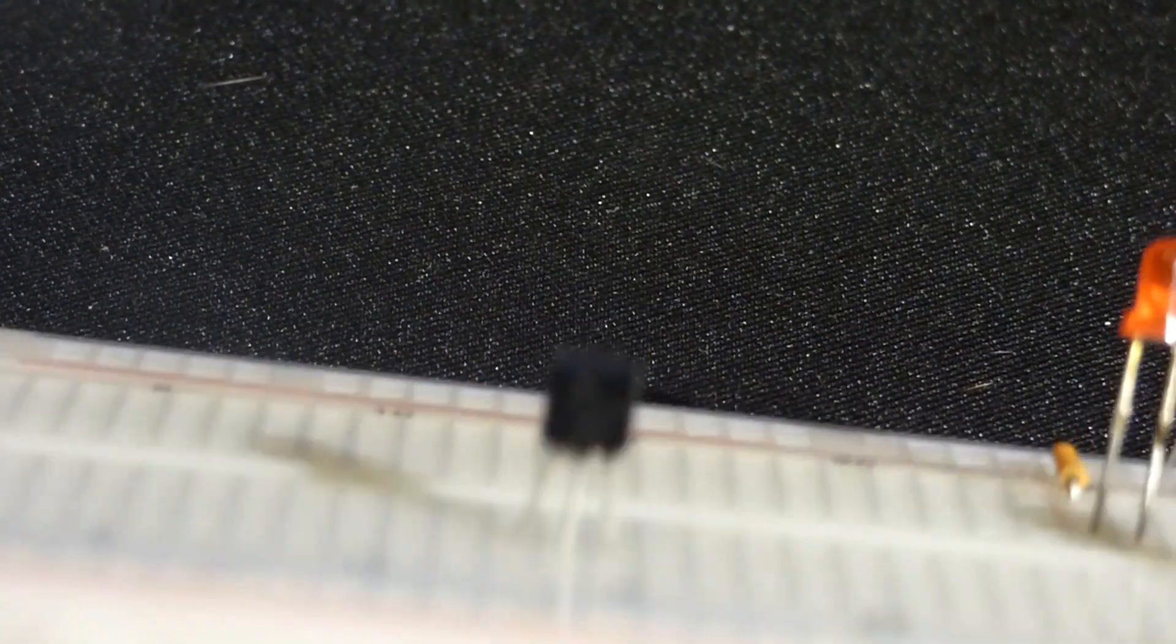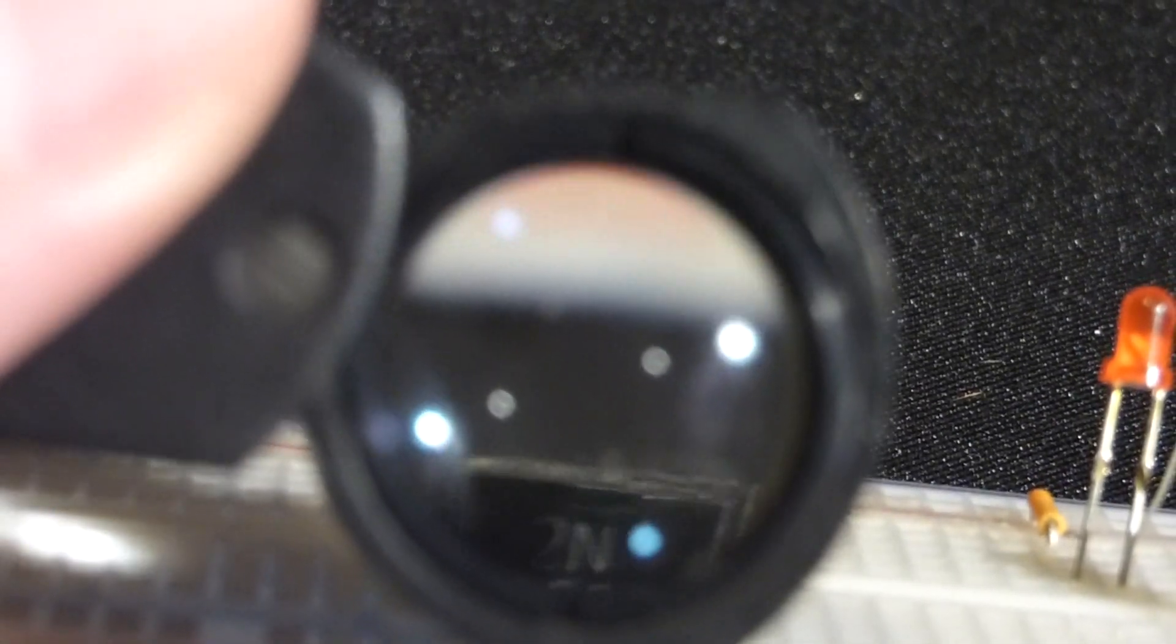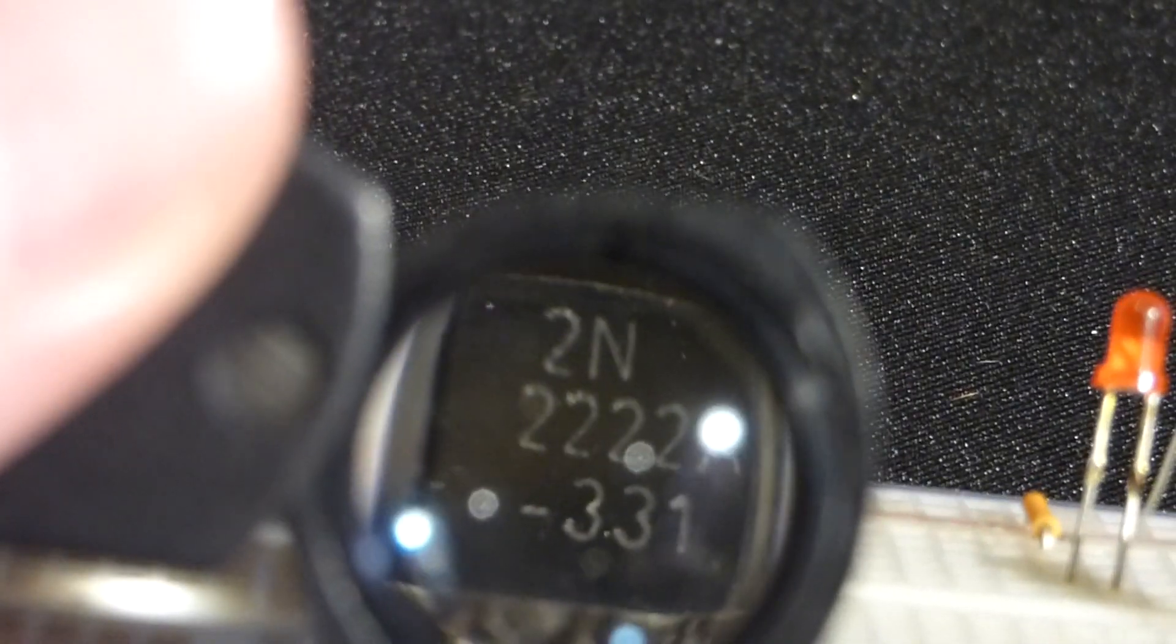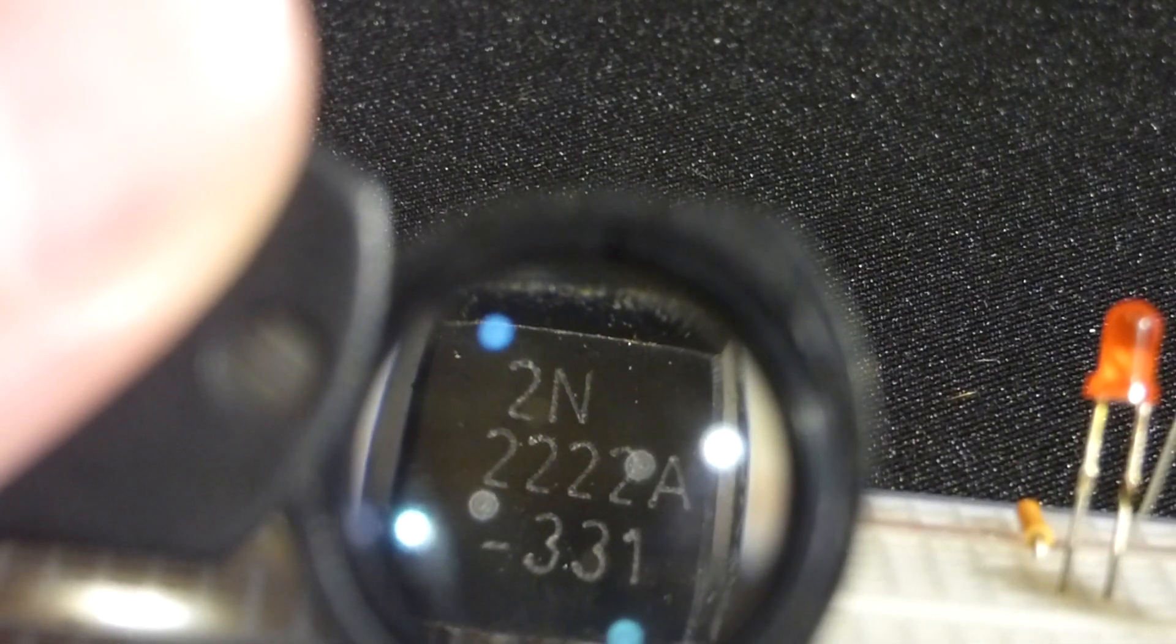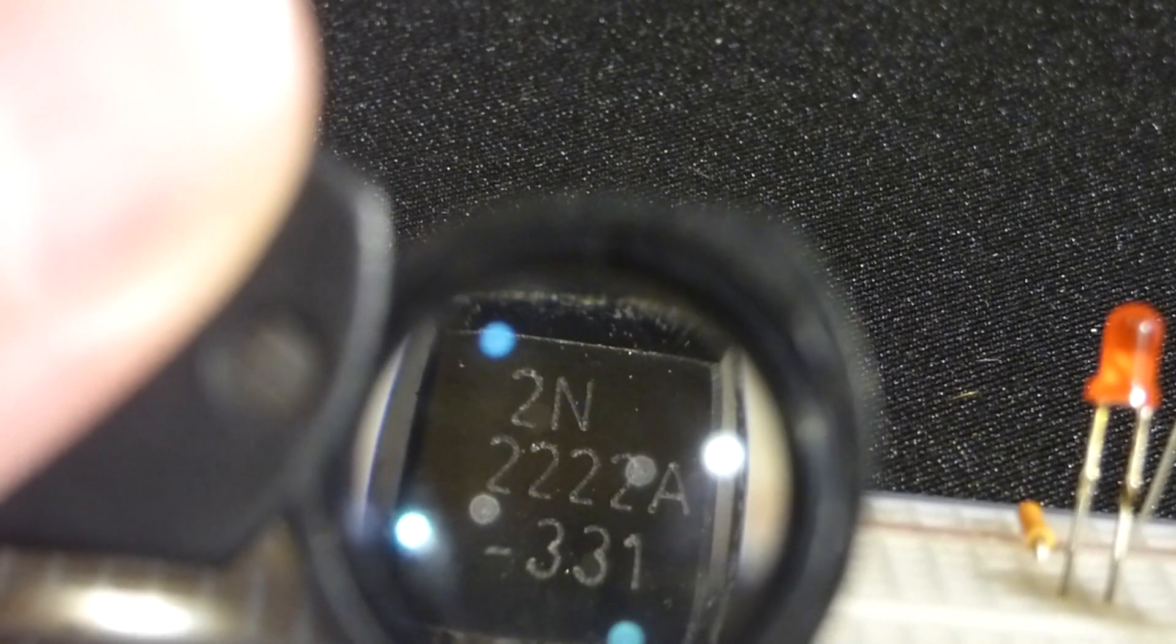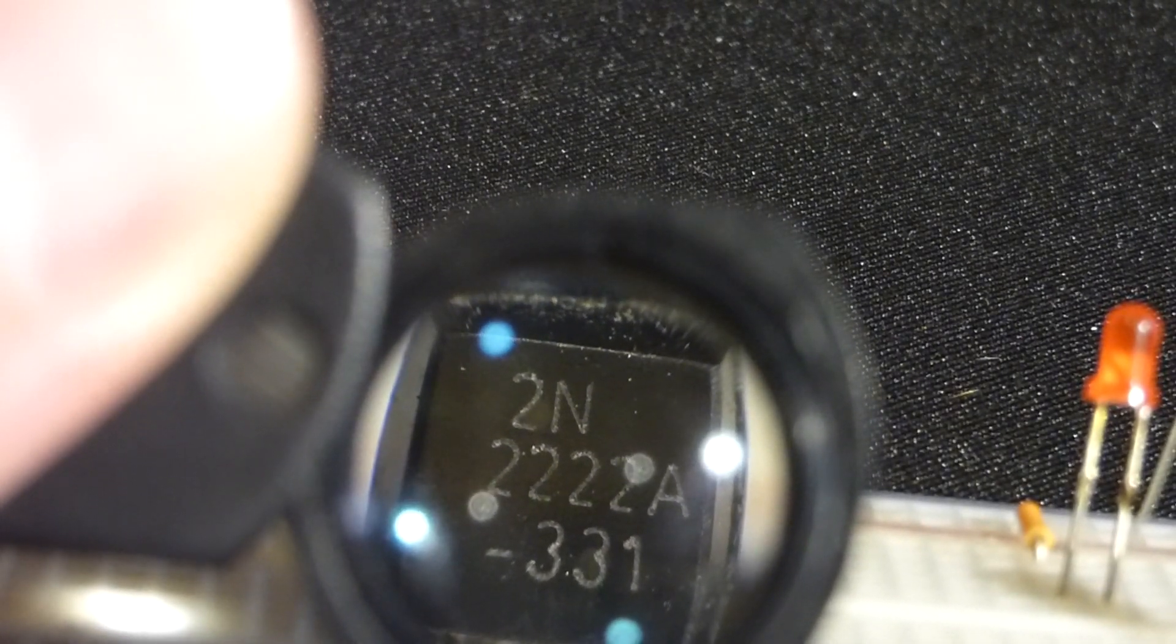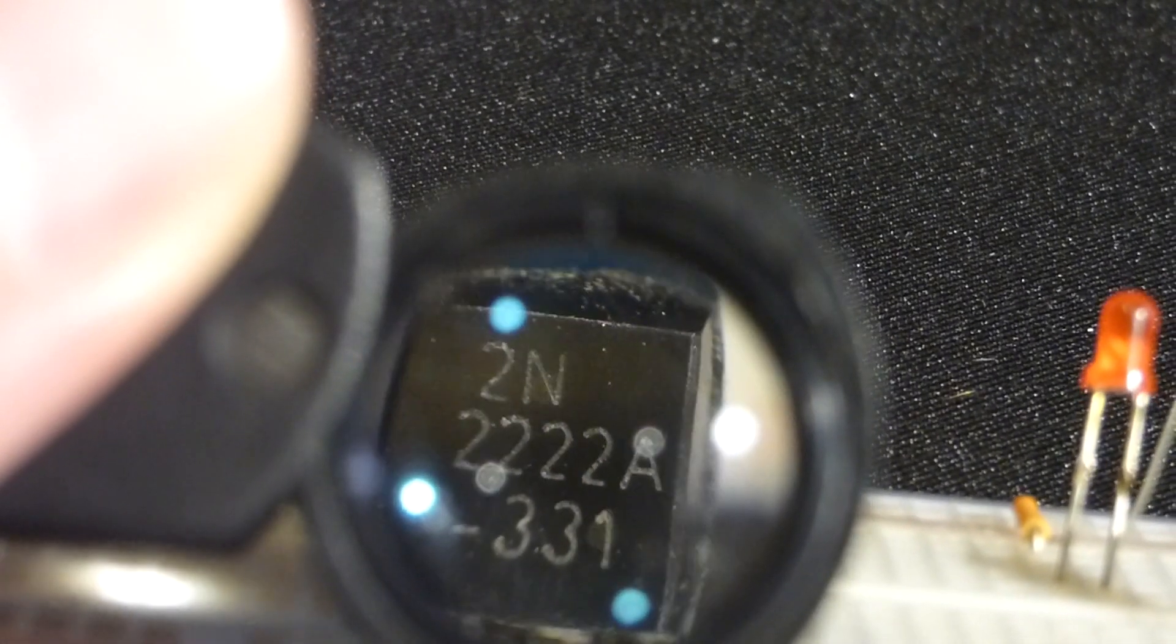Now, as I said before, a lot of components are made with the TO92 packaging. They look like this. So, you've got to look at the flat edge and read the writing on there to see what components you're dealing with. So, this is a 2N2222A. Now, we just really worry about the 2N2222 part for now. That's the part number.